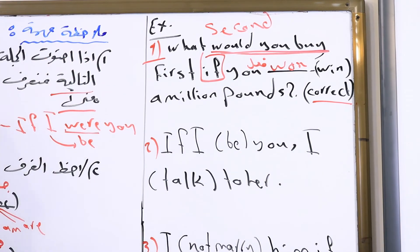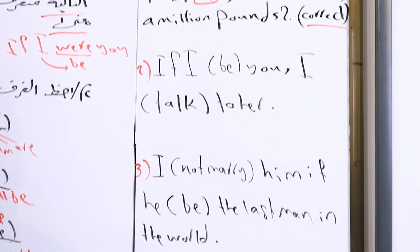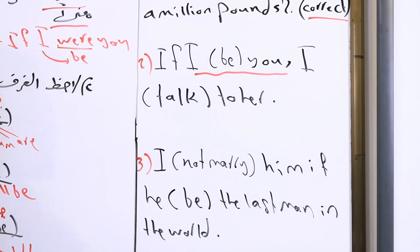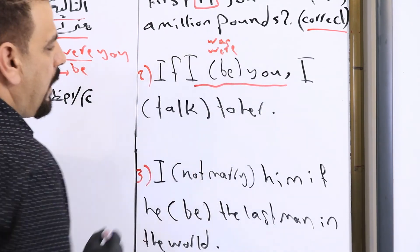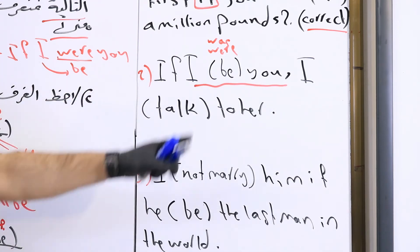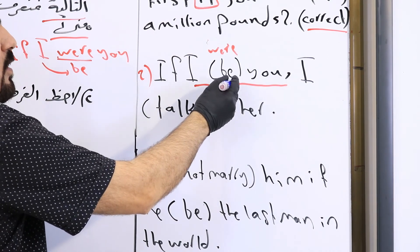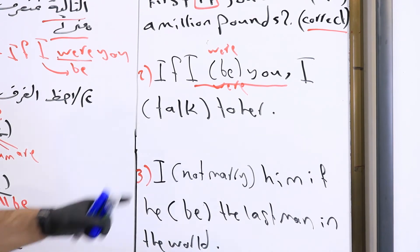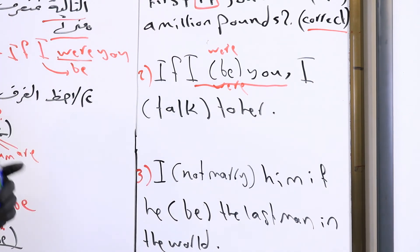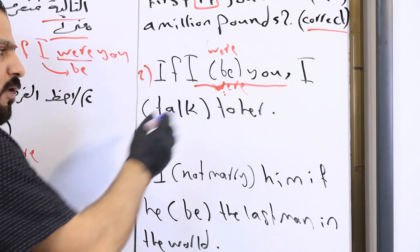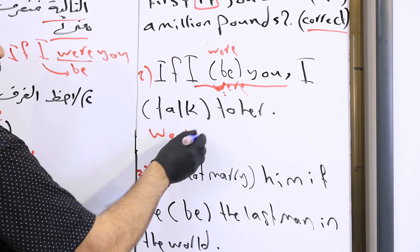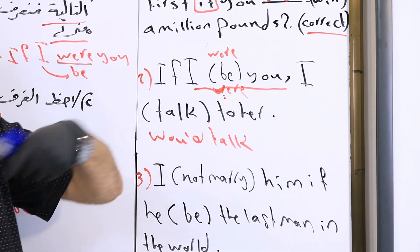Example two: 'if I be you' — whenever you see this expression, you know it's second conditional. The verb 'be' with subject 'you' must become 'if I were you' — meaning 'if I were in your place'. 'Were' is used here because the subject is 'you'. The result clause: 'I would talk.' Note: 'were' can sometimes be used even with he/she/it in second conditional, but memorize 'if I were you' specifically.